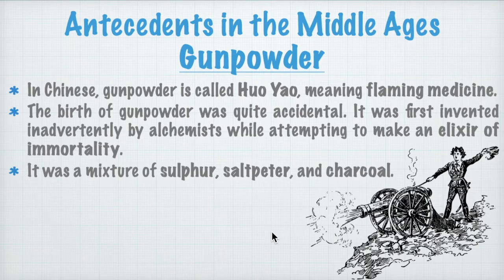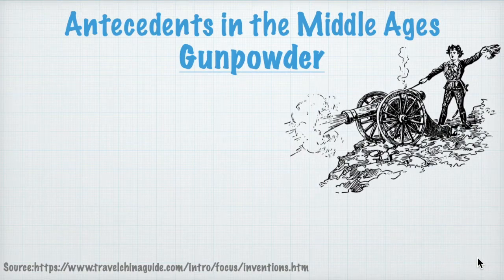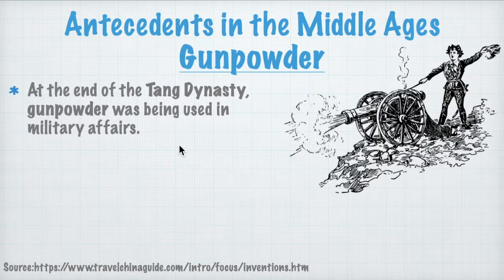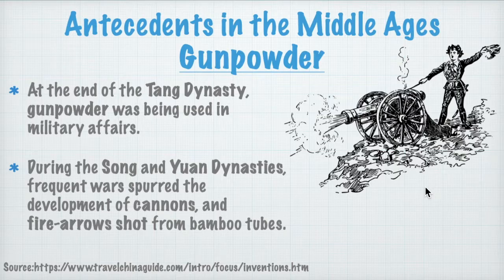With gunpowder came fireworks, and it's also used in artillery — essential in modern day weapons. At the end of the Tang dynasty, gunpowder was being used in military affairs, and during the Song and Yuan dynasties, frequent wars spurred the development of cannons and fire arrows shot from bamboo tubes. Eventually it reached Europe.